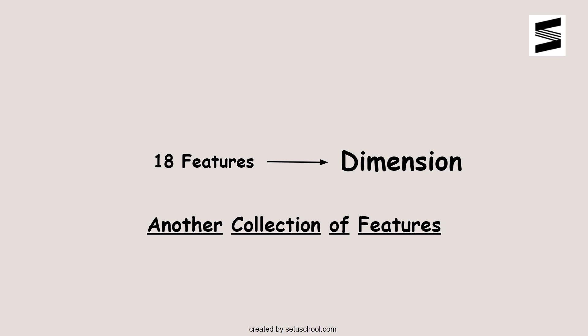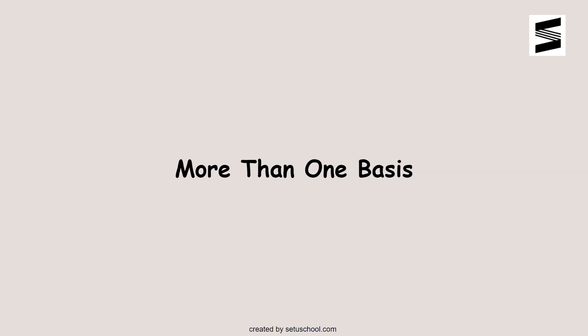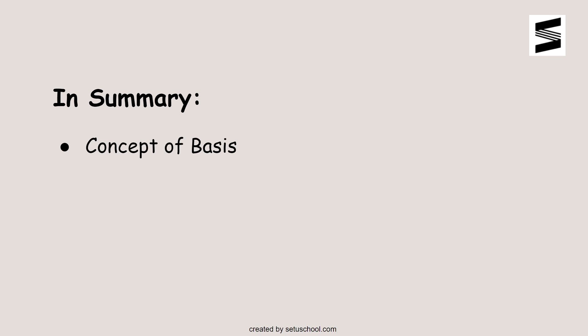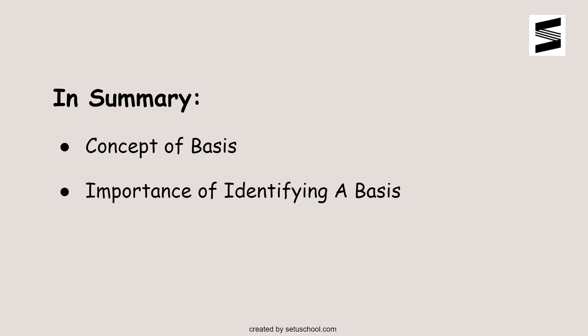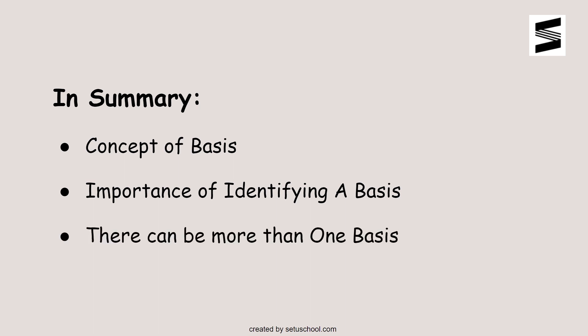Please note that even though the central government has identified these 18 features for unique identification, there may be other combinations of features which may also be able to uniquely identify one person. So there can be more than one basis for a vector space. In summary, in this video we have learned the concept of basis and looked into the importance of identifying a basis through the use case of Aadhaar, while also concluding that there can be more than one basis for a particular vector space.